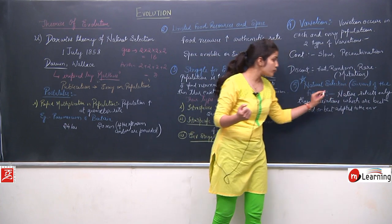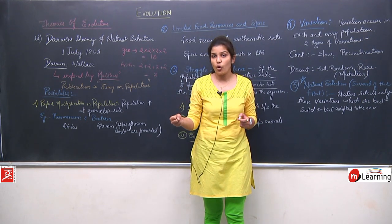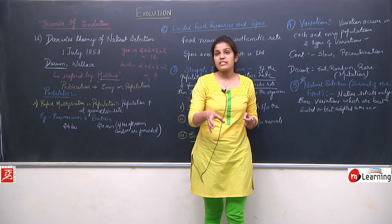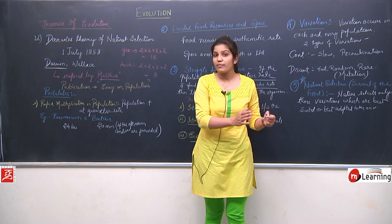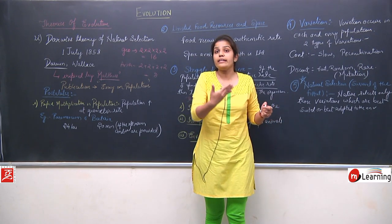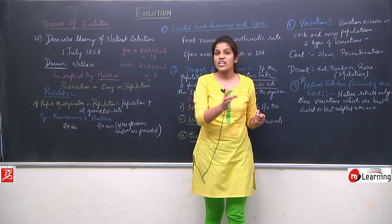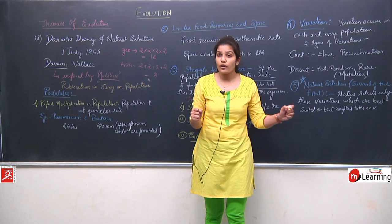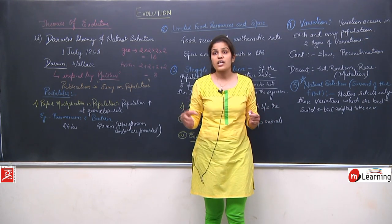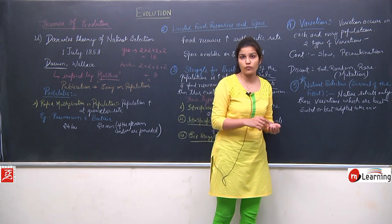The best variation or character acquired by the organism is selected by nature. The organism bearing that best character is considered the fittest because it has adapted itself to the environment. That fit organism is selected by nature, and this is called survival of the fittest. This was the fifth postulate of Darwin's theory.